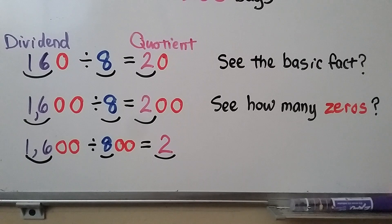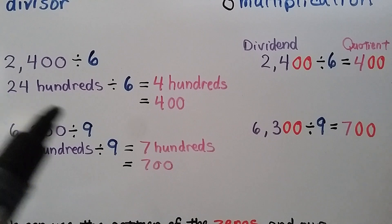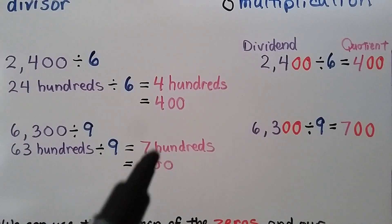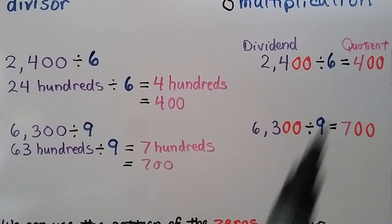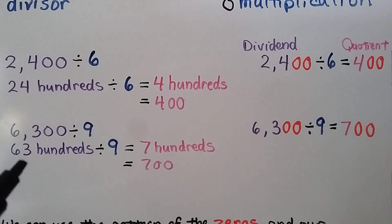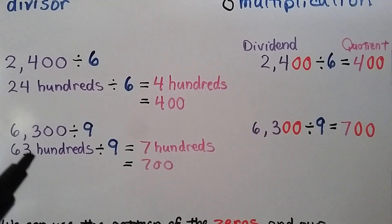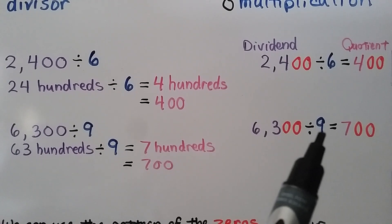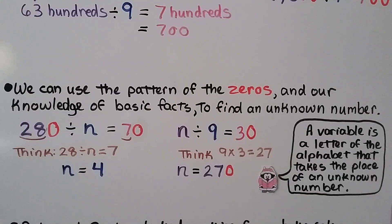Here we have 2400 divided by 6. We think 24 hundreds divided by 6: the basic fact is 24 divided by 6 equals 4, so the answer is 400. The dividend has two zeros, so the quotient has two zeros. For 6300 divided by 9, we think of 63 hundreds: 63 divided by 9 is 7, so 63 hundreds divided by 9 equals 700. Two zeros in the dividend and one-digit divisor gives two zeros in the quotient. We can use this zero pattern with basic facts to find unknown numbers.